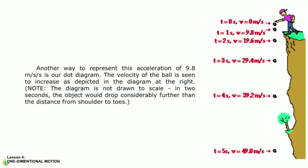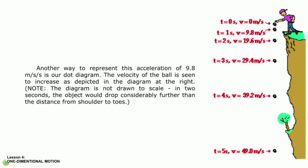Another way to represent this acceleration of 9.8 meters per second per second is a dot diagram. The velocity of the ball is seen to increase as depicted in the diagram at the right. Note the diagram is not drawn to scale — in 2 seconds, the object would drop considerably further than the distance from shoulder to toes.